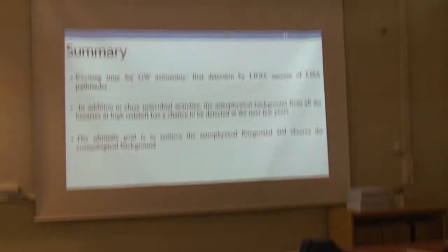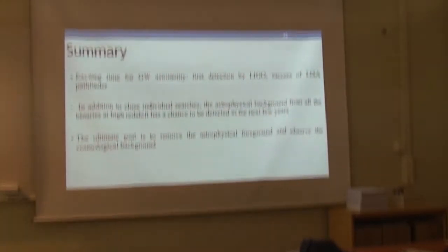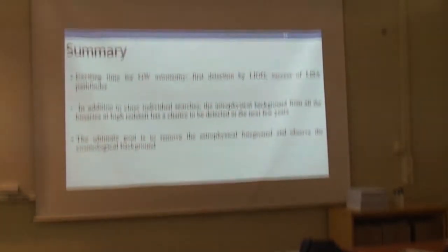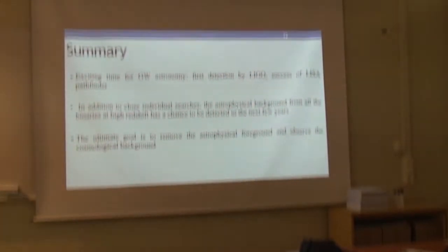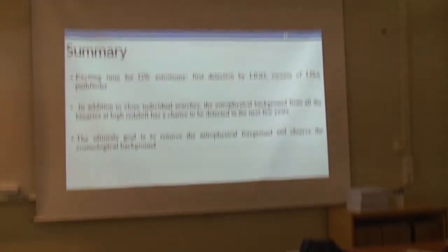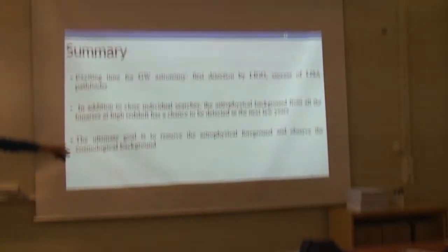Regarding sensitivity: the background from binary black holes is at about 10^{-8} to 10^{-9} for LIGO, but third-generation detectors reach down to 10^{-13}. If you subtract the astrophysical foreground, you can get to 10^{-13}. With advanced LIGO, if you subtract individually detected sources, you can get part of the way there with three or five detectors, but this is still a little too high. With third-generation detectors, you can almost subtract everything and reach the sensitivity limit from the inflationary background.